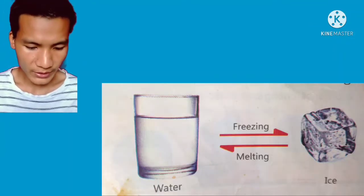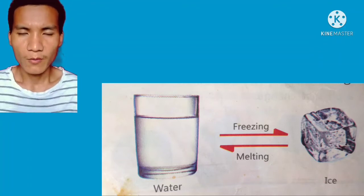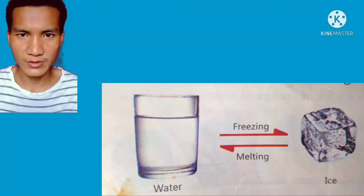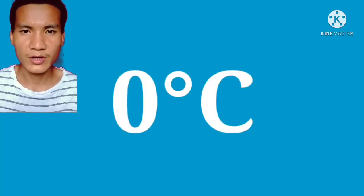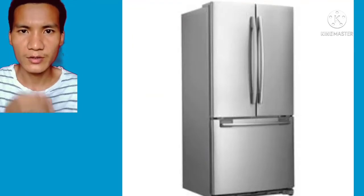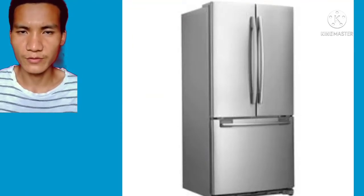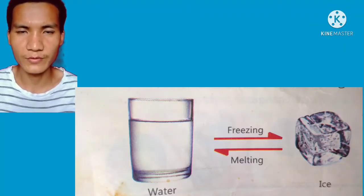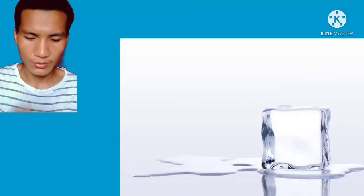Next we have freezing and melting. Freezing means when a liquid turns into a solid substance. For example, you take a cup of water and keep it in a freezer or refrigerator for an hour or three to four hours. After freezing it for a few hours, that liquid form will become solid — it will turn into an ice cube — because the temperature is very low.